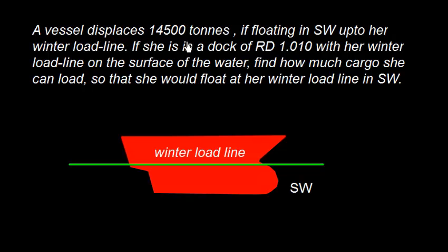A vessel displaces 14,500 tons if floating in salt water up to her winter load line. Now let us understand this part of the problem. Suppose this is the winter load line mark here and the vessel is floating up to this winter load line mark in salt water and here is the water line.